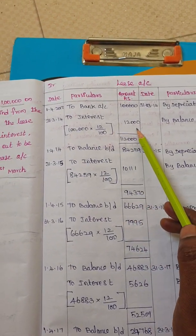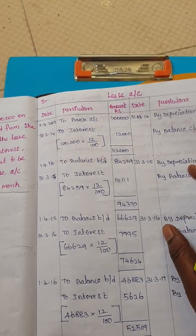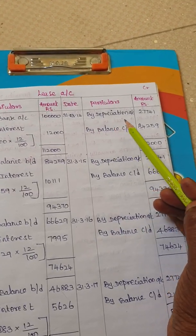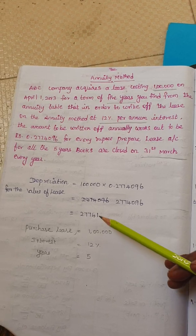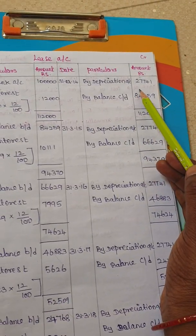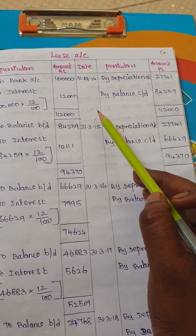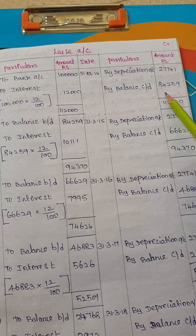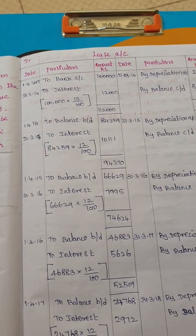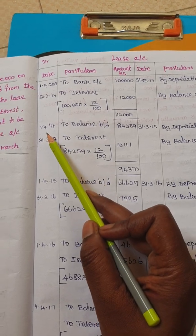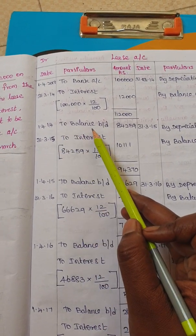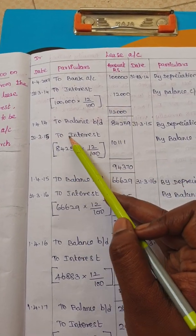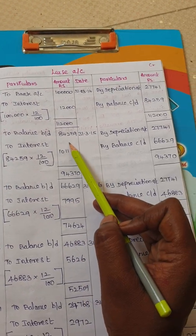From 1 lakh, we add 12% interest which gives 1,12,000. Now, going to the depreciation account: by depreciation account, we have to pay the value for 1 year, so that value is 27,741. By balance carried out as usual — if you have 1,12,000 and subtract depreciation, you will get 84,259. So the balance carried down is 84,259.